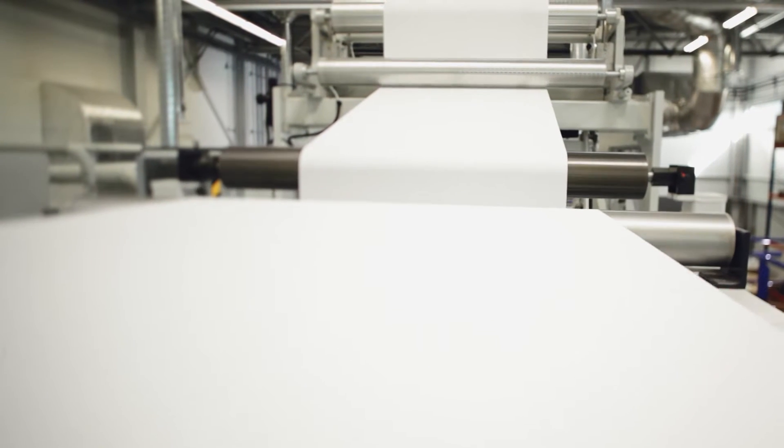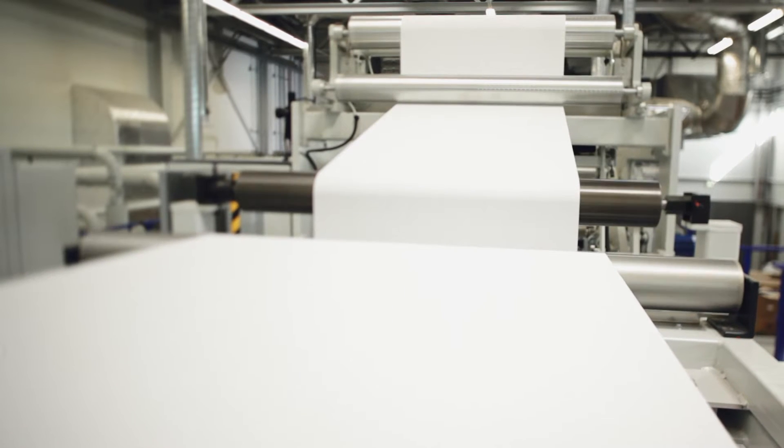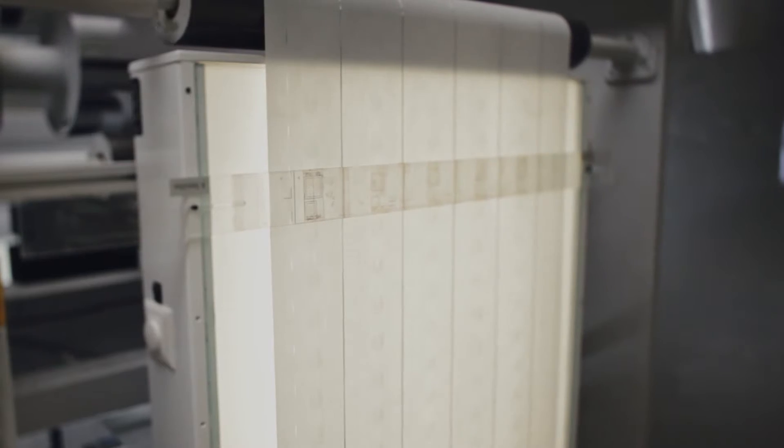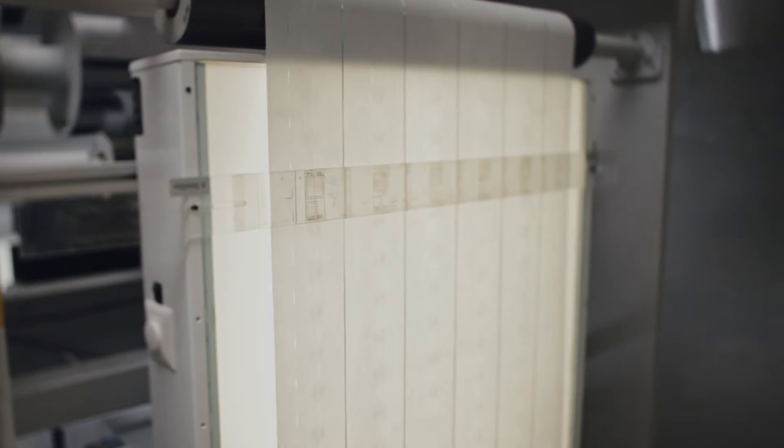At first sight this looks like regular paper, but it is in fact Durasafe, the substrate for the new Swiss banknote series. Durasafe is an innovative combination of paper and polymer, a plastic layer.